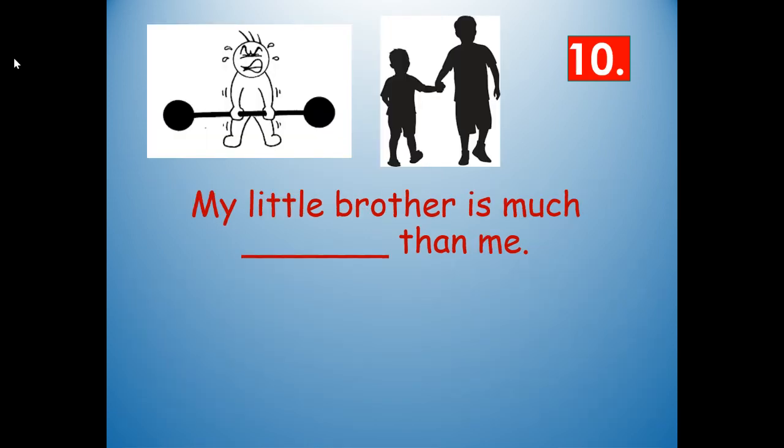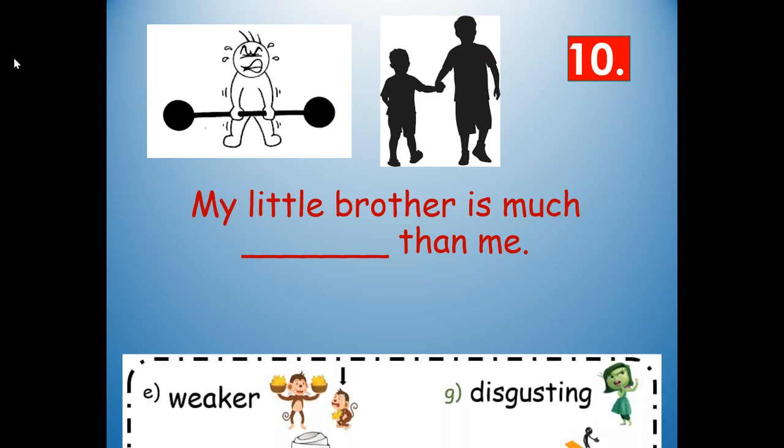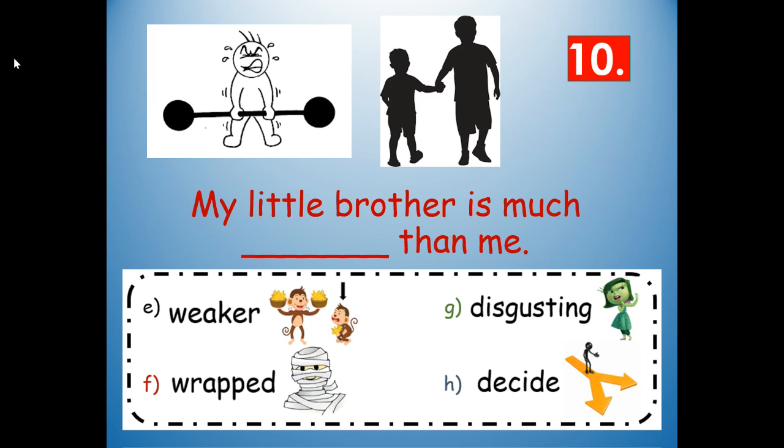Number 10: my little brother is much blanker than me. Would it be weaker, wrapped, disgusting, or decide? What makes sense given where the word is in the sentence and our picture clues? Weaker — W-E-A-K-E-R. The word is weak, and weaker is comparing someone who's stronger and someone who's weaker to each other. My little brother is much weaker than me.